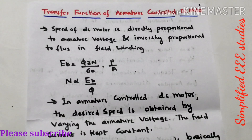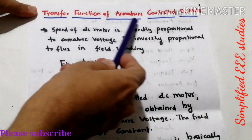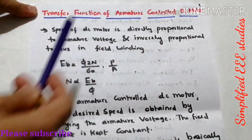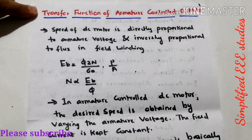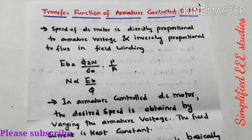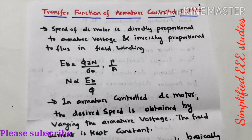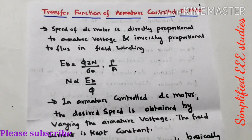Hello everyone. In this session I will be explaining how to find out the transfer function of armature control DC motor. As you know, in DC shunt motor there are two types of speed control technique. The first method is known as armature control speed control technique and the second method is known as field control speed control method. Now let us discuss about armature control DC motor.